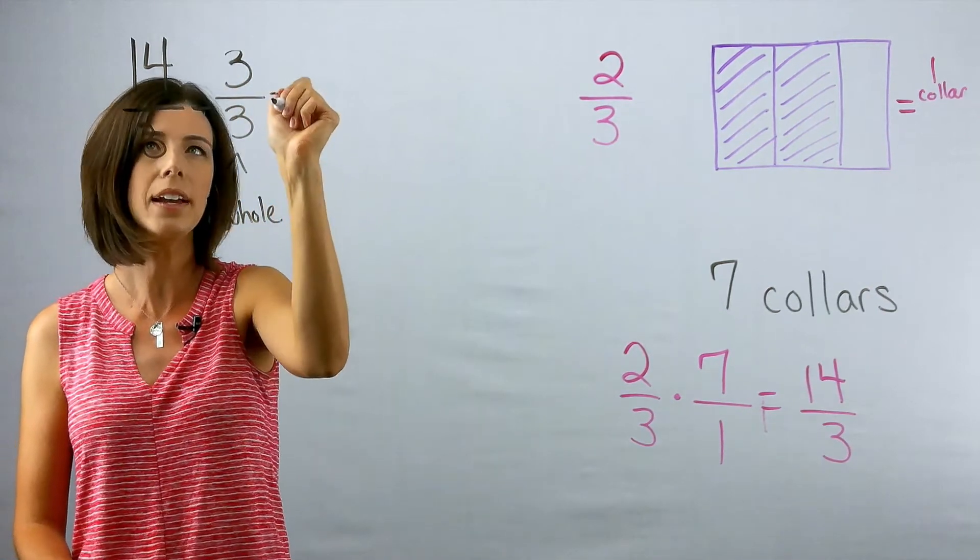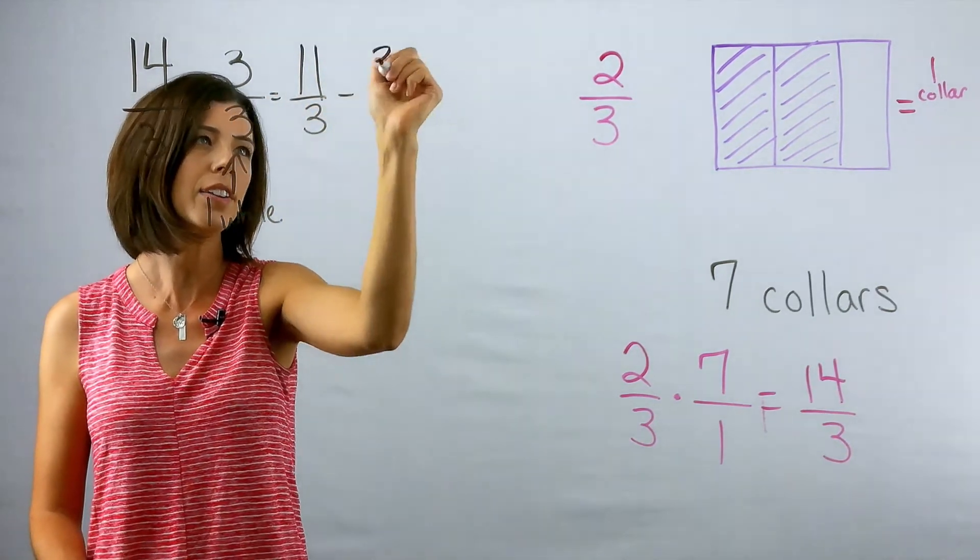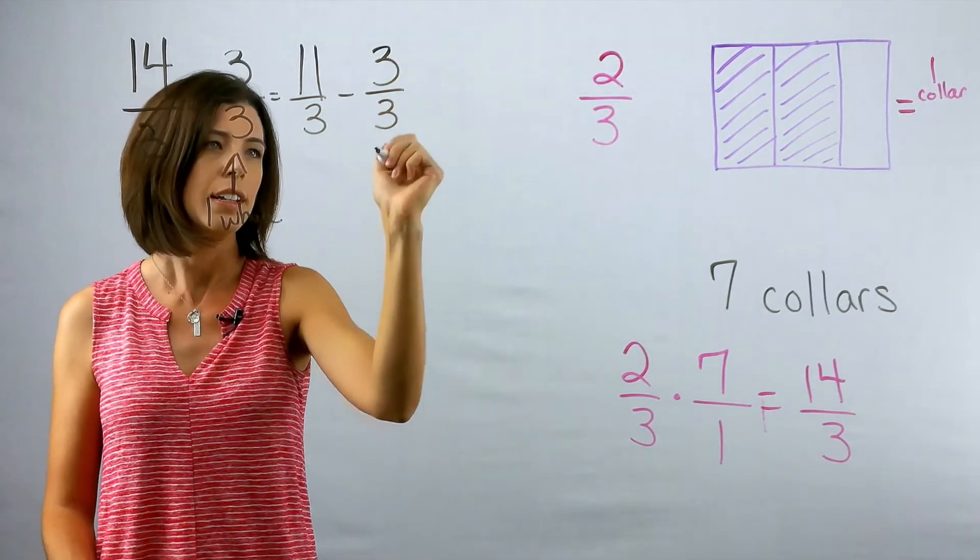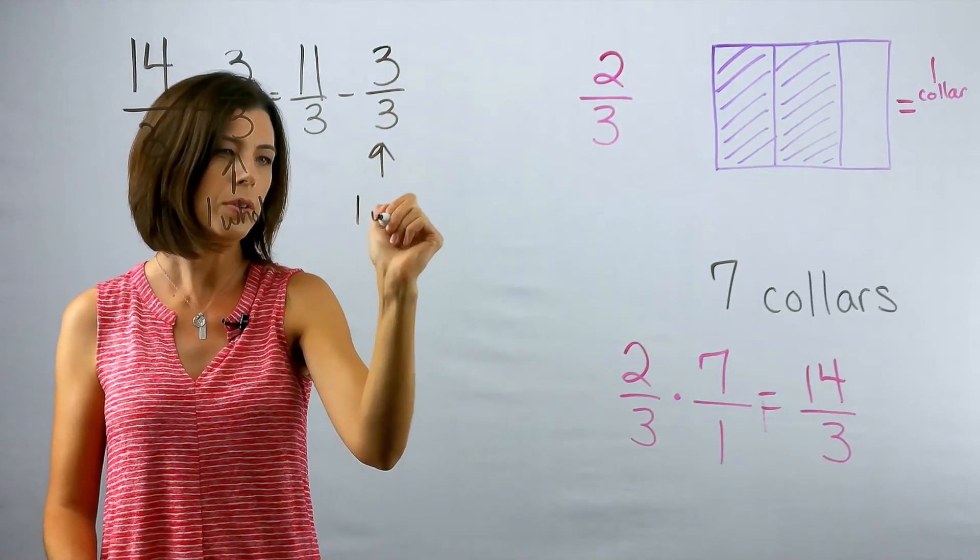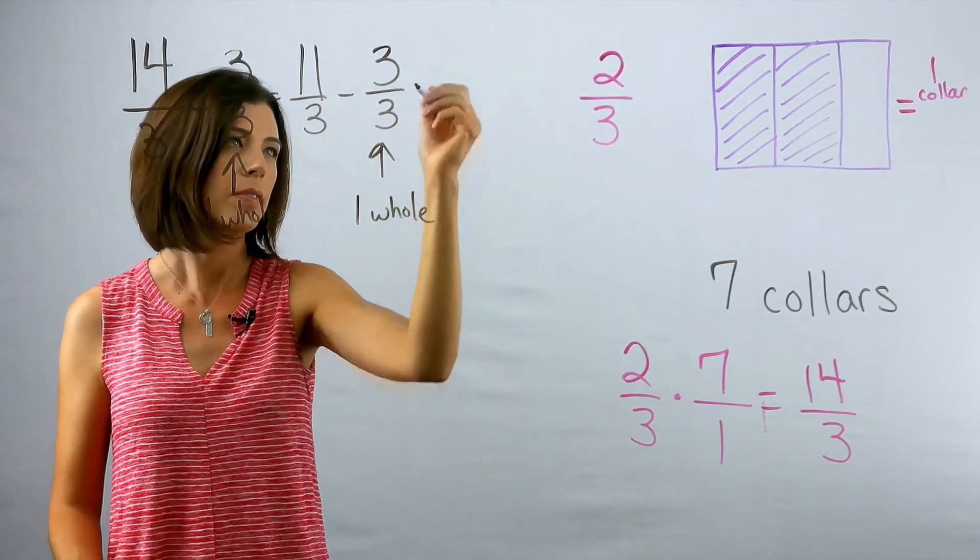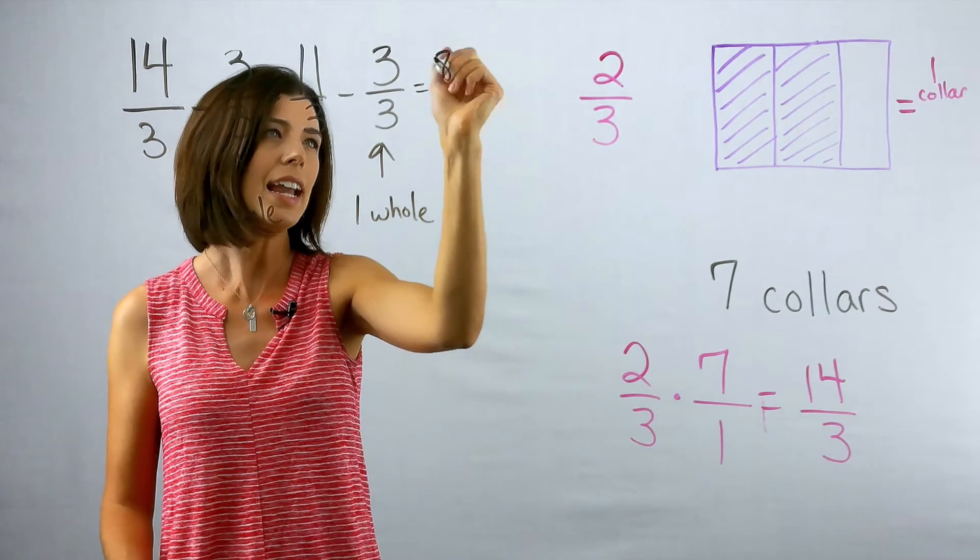Okay, now I get 11 thirds. I know I can take out another three-thirds. Again, that's another whole. I get eight-thirds.